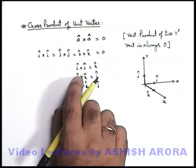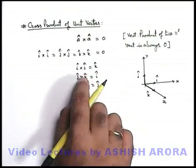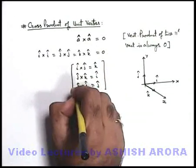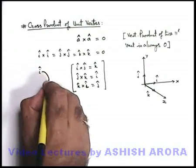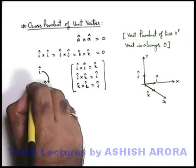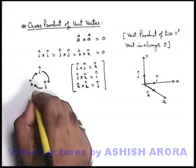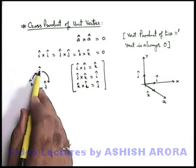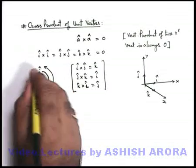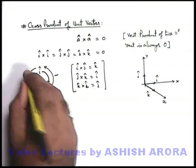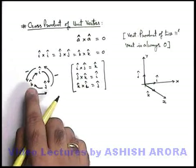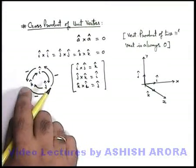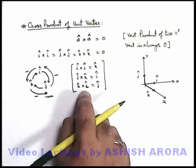If we reverse the order: j cross i equals minus k-cap, k cross j equals minus i-cap, and i cross k equals minus j-cap. To remember these, we draw a circle with the three unit vectors i, j, and k. If the circle is clockwise: i cross j is k, j cross k is i, k cross i is j. If we go anticlockwise, we put a negative sign: k cross j is minus i, i cross k is minus j, j cross i is minus k.